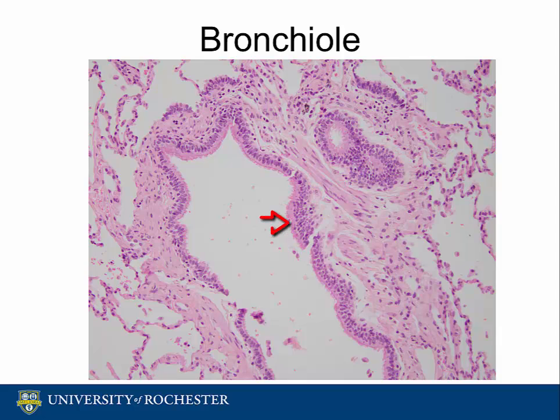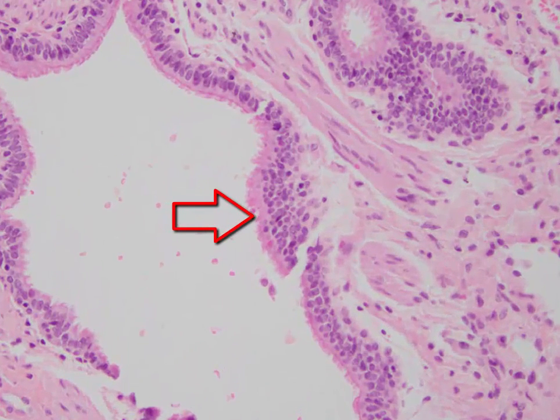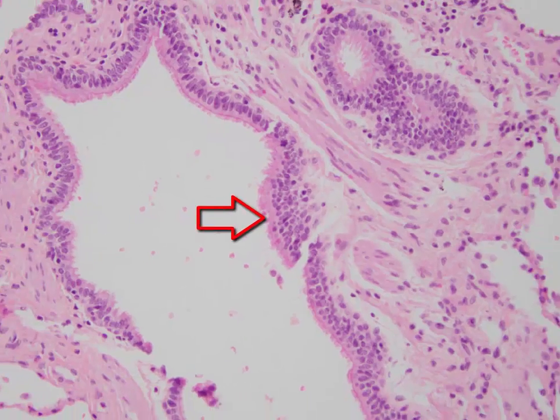Here we can distinctly see the ciliary brush border that is characteristic of many of the body's epithelial linings. The rhythmic beating motion of the cilia moves mucus from the lungs upward toward the epiglottis, where it is swallowed.